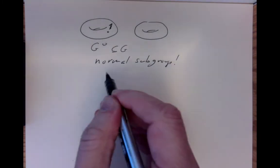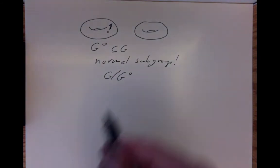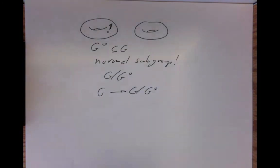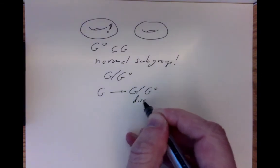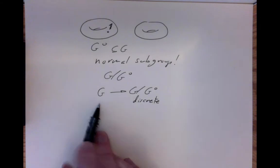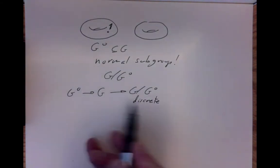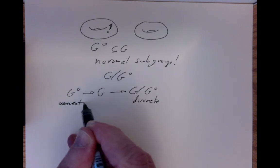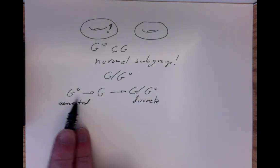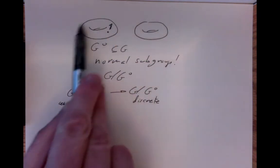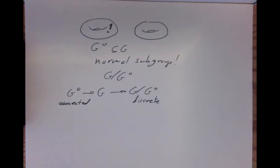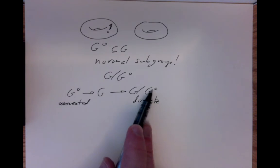Since G0 is a normal subgroup, there is a quotient group G/G0, and of course there's a group morphism to the quotient. This quotient has a discrete topology. So we end up with a sequence of maps: G0 is connected — it's the component of the identity element — G is any Lie group with possibly many components, and G/G0 is a discrete group. The topological components and path components of a manifold are the same, which is an easy exercise.